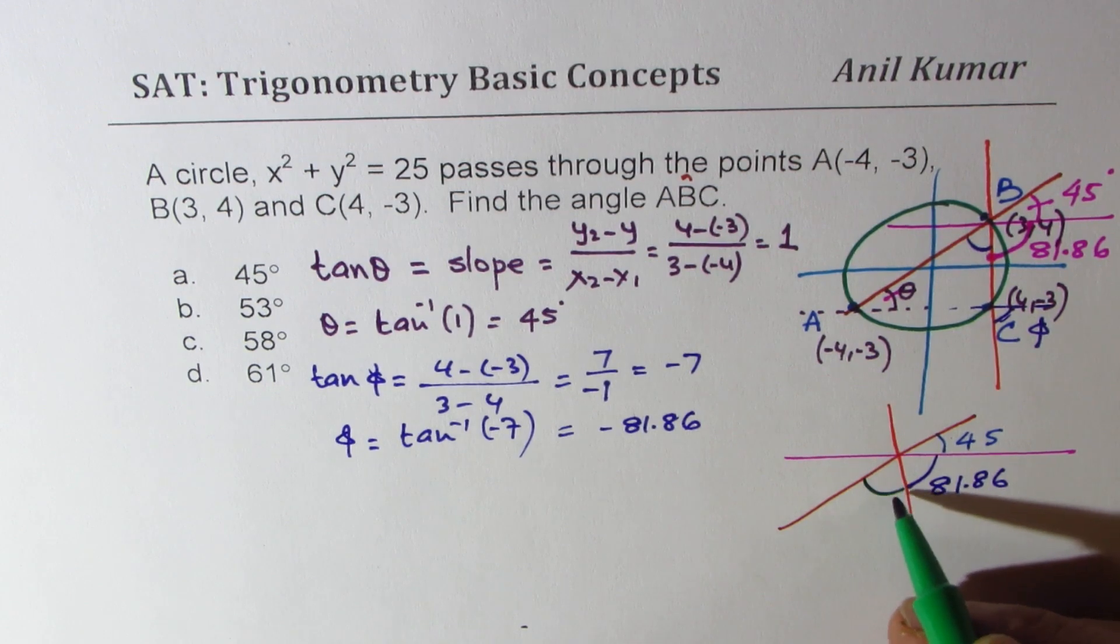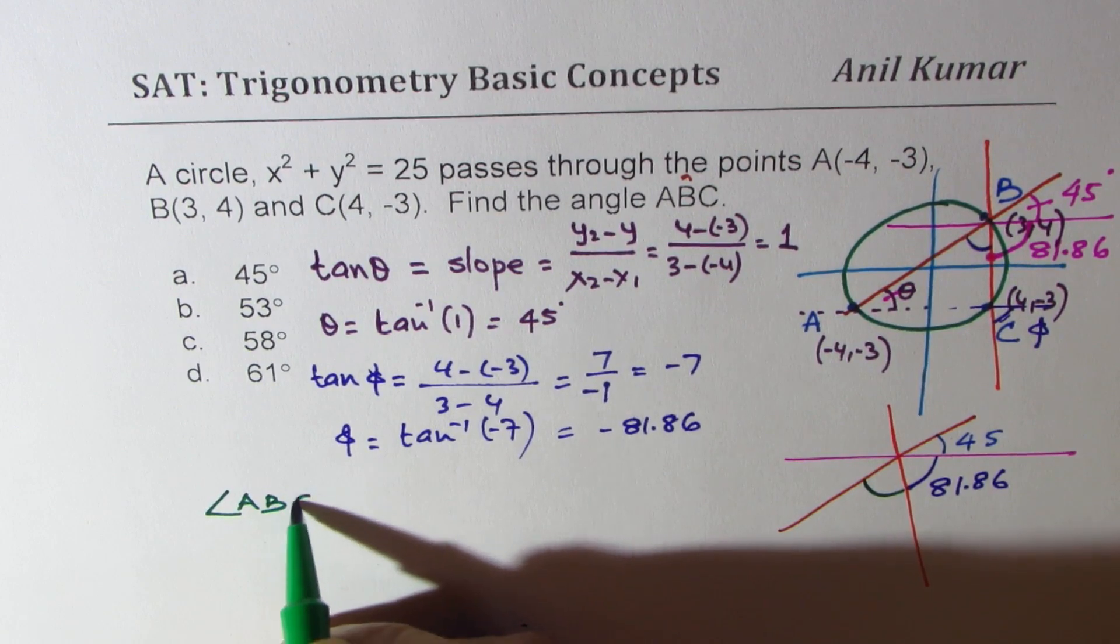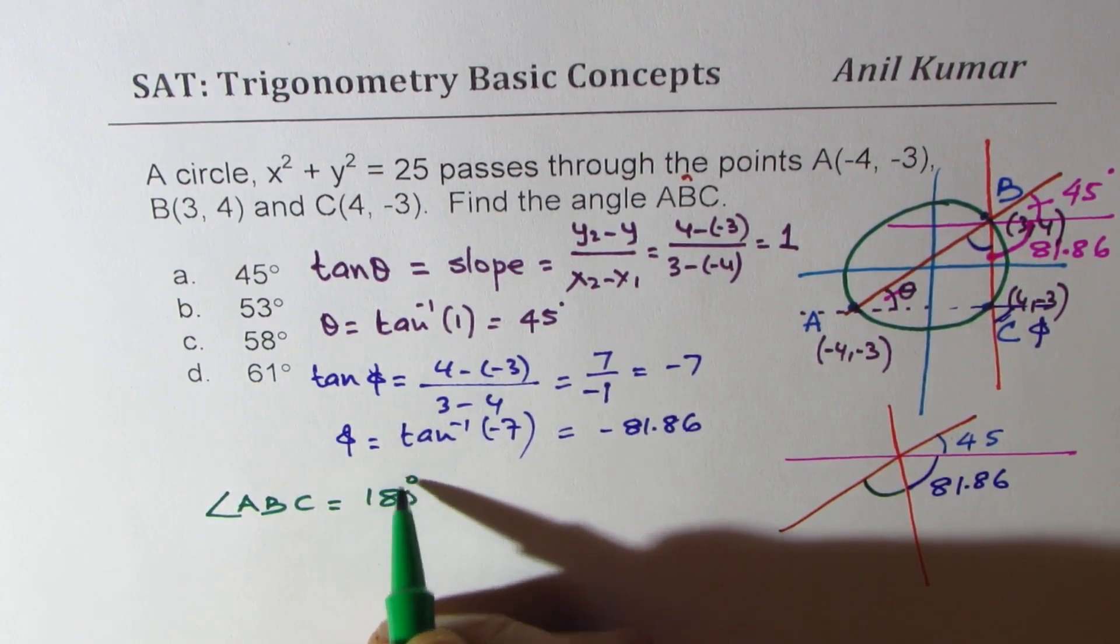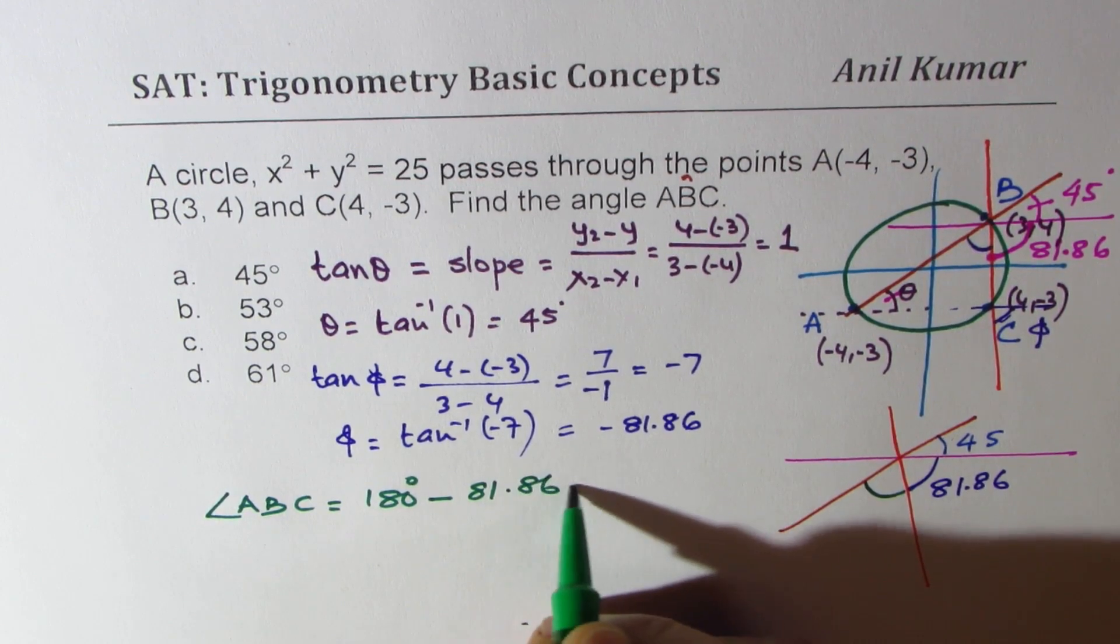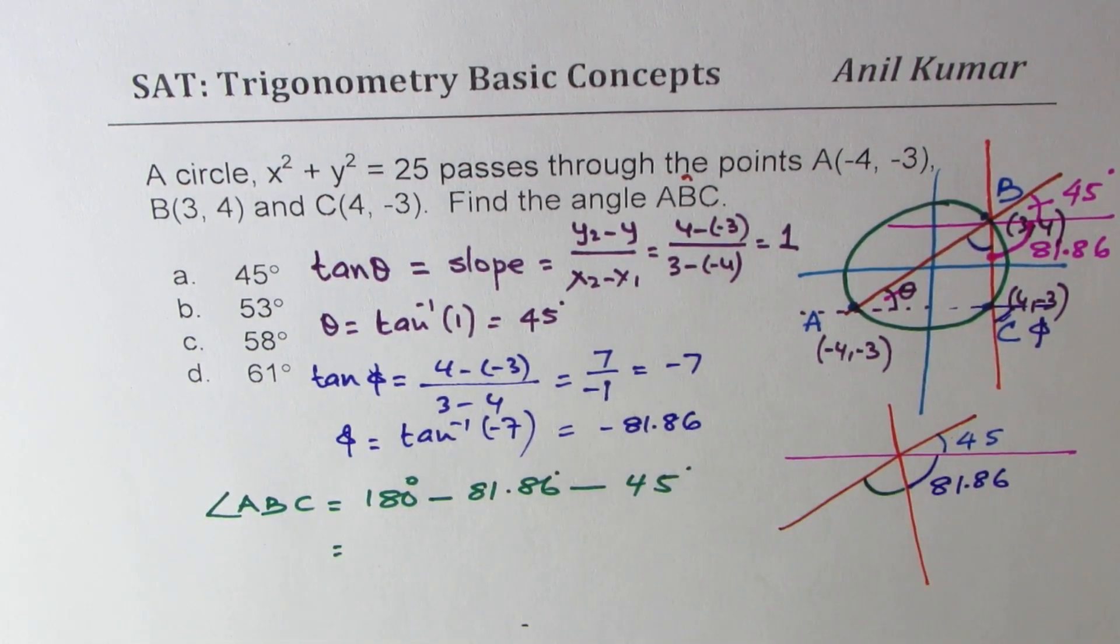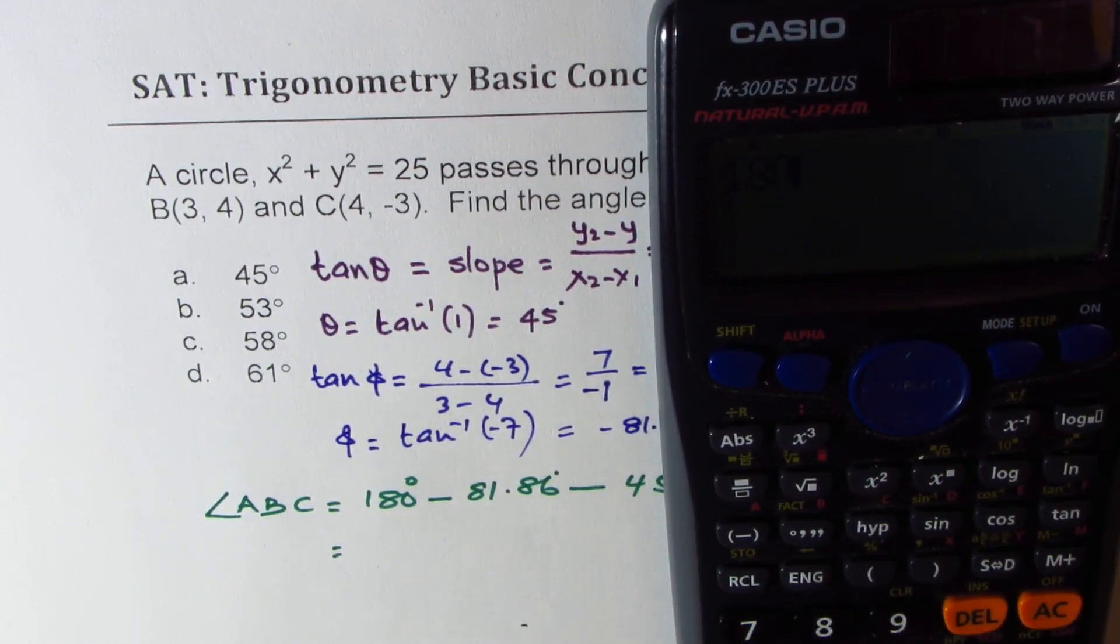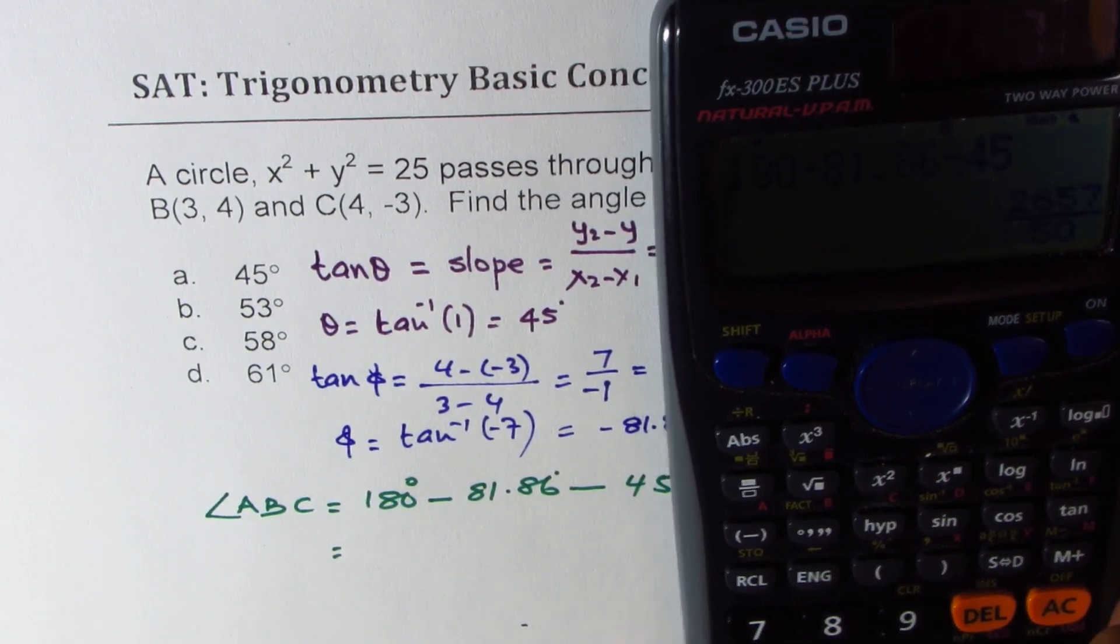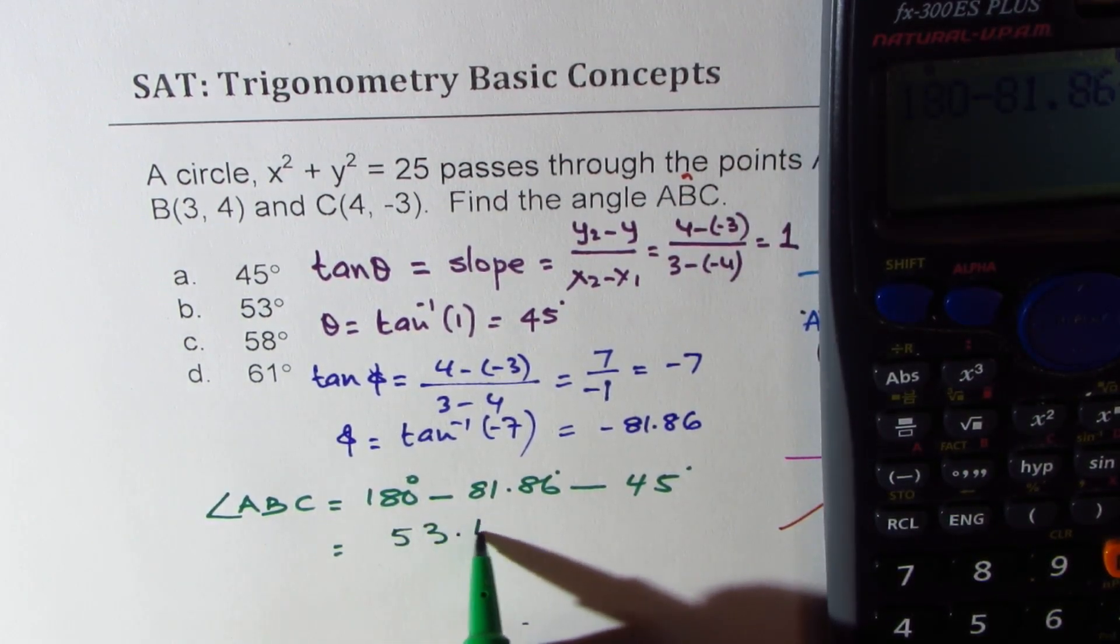What do we need to find? We need to find this angle. So out of 180, that angle should be how much? So we get the angle ABC equals 180 degrees minus 81.86 minus 45 degrees. Is it okay? So we get our answer, so which is 180 minus 81.86 minus 45, which is equal to in decimals 53.14.